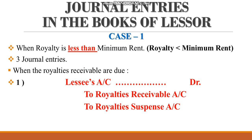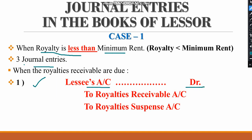Remember the cases, and according to each case there will be corresponding entries. Case number one: when royalty is less than minimum rent. There are three entries you need to pass. The first entry is: Lessee's account debit, to royalty receivable account, to royalty suspense account. Suspense here means short working — which is the loss, i.e., the difference between minimum rent and royalty.